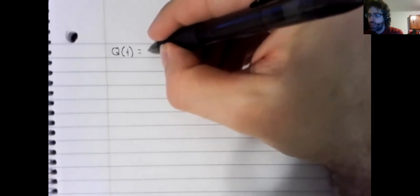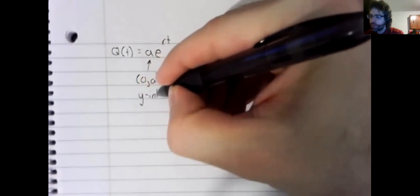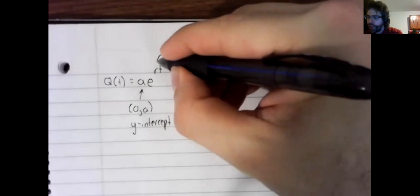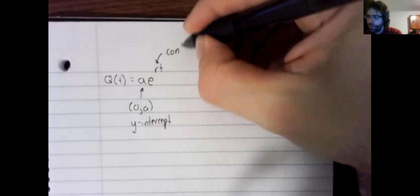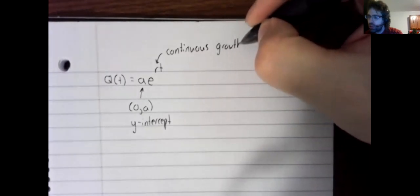However, let's take a look at their graphs. When we have an exponential function written like this, this a still represents the y-intercept and this r is the so-called continuous growth rate.